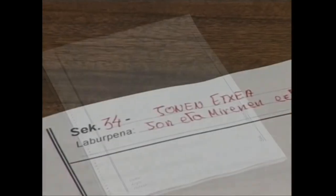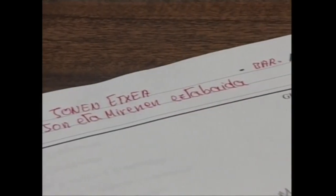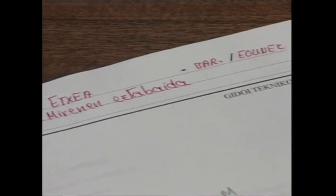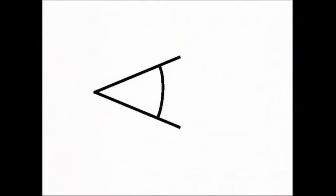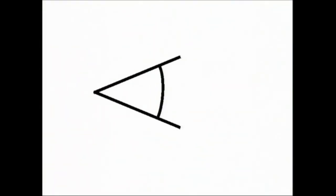Gidoi teknikoa egiteko, honelako horrialde eredu bat erabiliko dugu, non kameraren kokaguneak eta interesgarriak iruditzen zaizkigun oar teknikoak zehaztuko ditugun. Gidoi teknikoa egiterakoan, lana errazteko zeinu batzuez baliatuko gara. Zeinu hauek mundu osoan erabiltzen dira. Hau xe da kameraren zeinua.